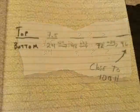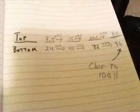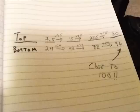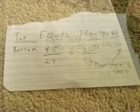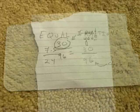Now count the bottom until you're close to 100, then you count the top just like you count the bottom. You get your new number and equivalent fraction.